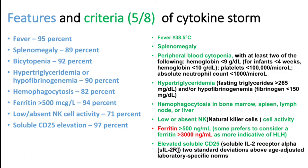Another investigation we can do in clinical practice is elevated soluble CD25, which can be present in cytokine storm. In practice, we should look for 5 out of 8 criteria: fever, splenomegaly, peripheral cytopenia, hypertriglyceridemia, hypofibrinogenemia, hemophagocytosis on bone marrow, and ferritin level. Ferritin more than 3000 in an acute inflammatory condition may indicate HLH or cytokine storm syndrome.